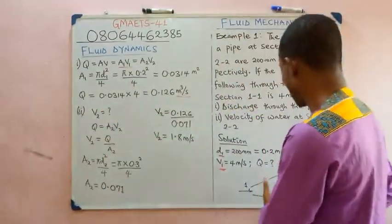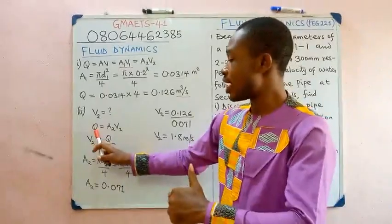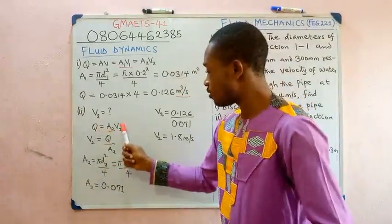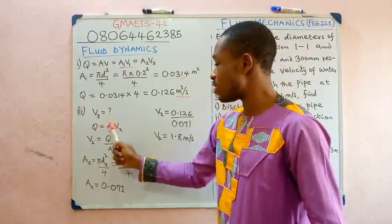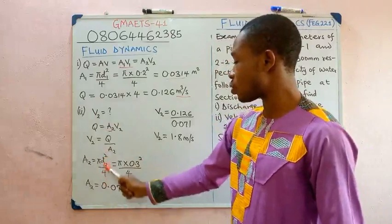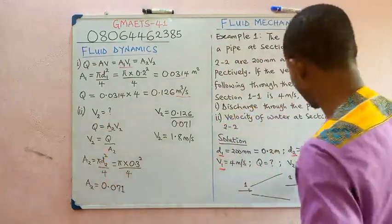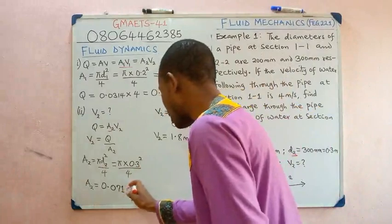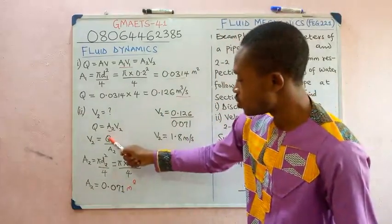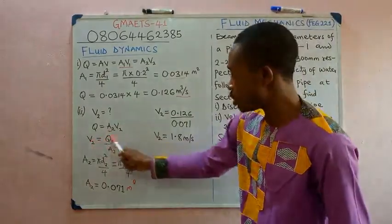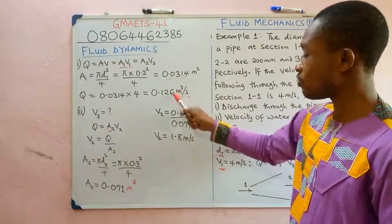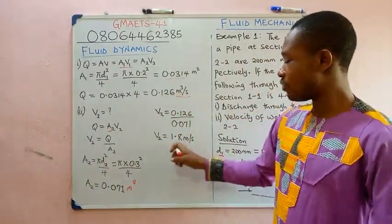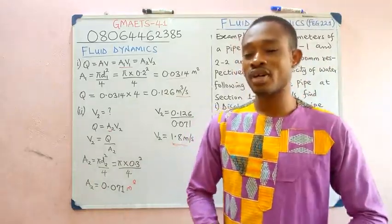Since we know the discharge, we can find the outlet velocity. Area 2: A2 = π(0.3)²/4 = 0.071 m². Then V2 = Q/A2 = 0.126/0.071 ≈ 1.8 m/s. That is the velocity of water at section 2-2.